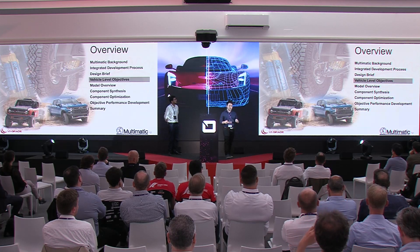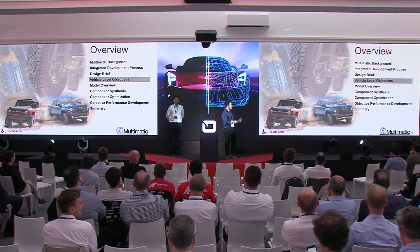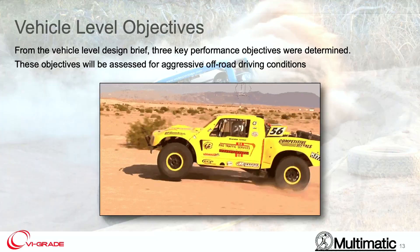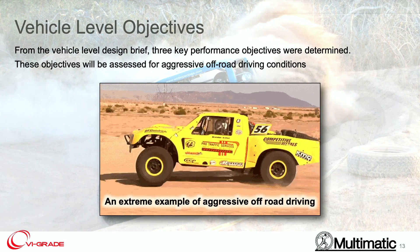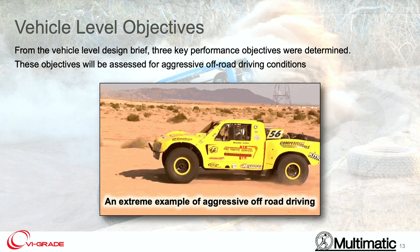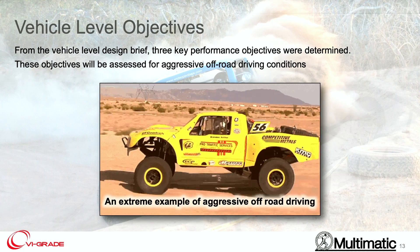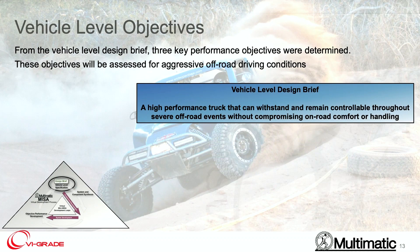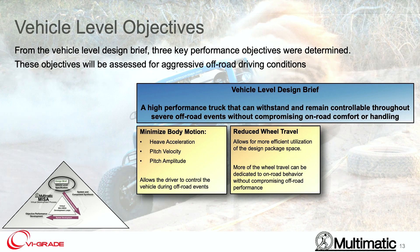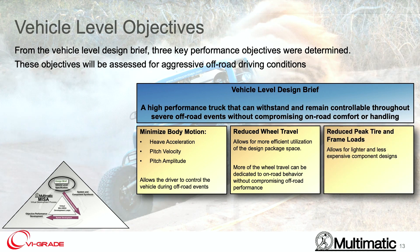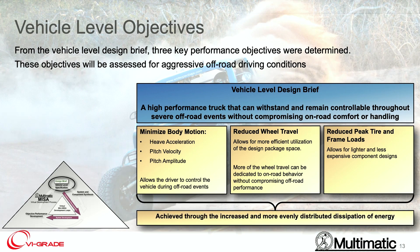Now let's talk about vehicle-level objectives. Now that we know qualitatively what we want, let's assign quantitative values to that. We want to maintain control and withstand the loads that come with aggressive off-road driving — we're airborne quite a bit of the time, and whenever we do have loads, they're very sharp and very sudden. Starting at the top of our MESA virtual development loop, we have three different goals: minimize body motion — things like heave acceleration, pitch velocity, pitch amplitude; reduce wheel travel and use it more effectively; and reduce peak tire and frame loads. To summarize, we want to increase the amount of energy we're dissipating and do it more evenly throughout the travel of the wheel.